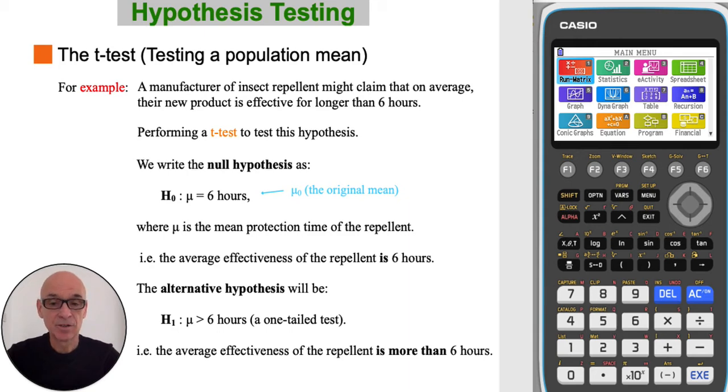And the alternative hypothesis, H1, would be that the mean is greater than six hours. In other words, a one-tailed test, stating that the average effectiveness of the repellent is more than six hours.